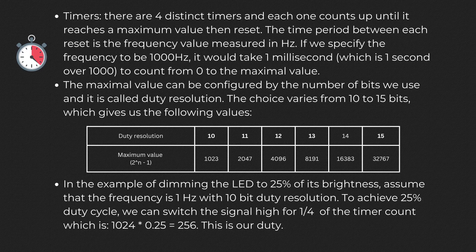Let's talk about timer first. There are four distinct timers, and each one counts up until it reaches a maximum value, then resets. The time period between each reset is the frequency value measured in hertz. If we specify the frequency to be 1000 hertz, it would take one millisecond, which is one second over 1000, to count from zero to the maximal value.